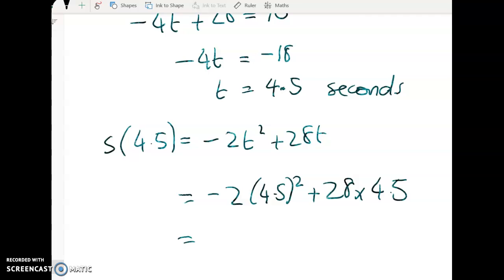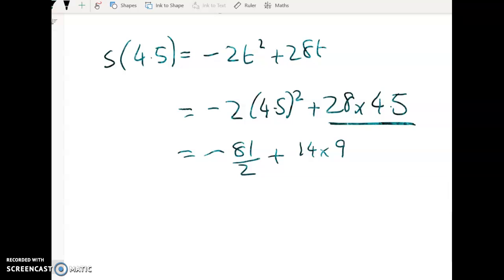And in here, what have I got? Well, I'm just looking at my working. So we've got negative 81 over 2 plus this thing here works out to be 14 times 9. I know that you're just going to chuck that in your calculator and that's fine. So I got 85.5 meters.